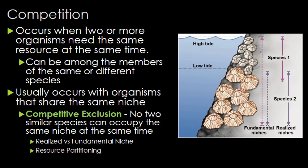If you look at the example on the right, you have a fundamental and a realized niche. The fundamental niche is where the species could live if there was no competition. The realized niche takes competition into account. Now over time you can have something called resource partitioning. For example, you have birds living in a tree and they all feed on insects in the tree. You can reduce competition for those resources by splitting up the parts of the tree, essentially creating a sub-realized niche within an area to lessen the effects of competition.